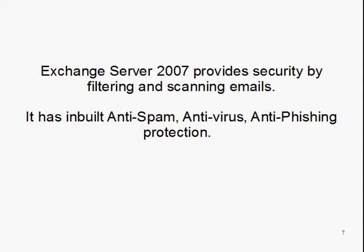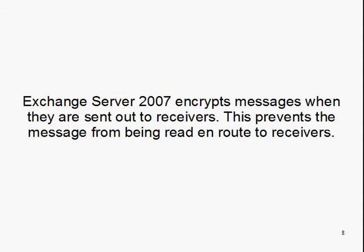Exchange Server 2007 provides security by filtering and scanning emails. It has inbuilt anti-spam, anti-virus, and anti-phishing protection. Exchange Server 2007 also encrypts messages when they are sent out to receivers, which prevents the message from being read en route to receivers.